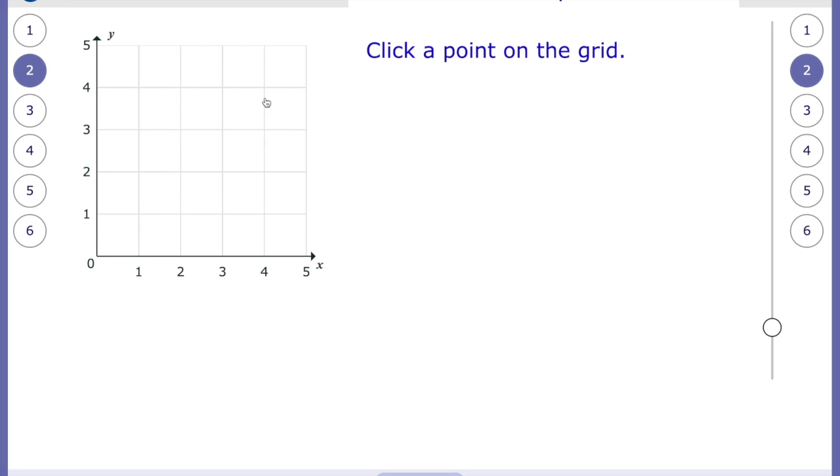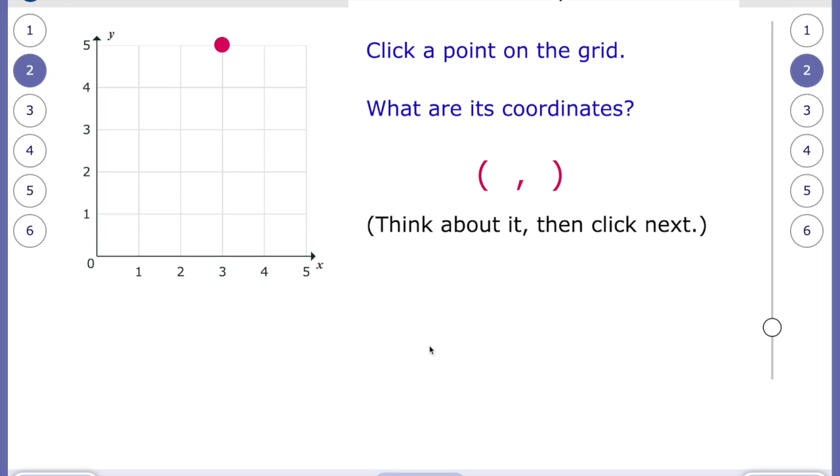If we click a point on the grid, let's say, for example, here. Now have a think. Think about what we just spoke about. What is that coordinate? There's two possible answers. Is it five, three, or three, five? What do you think? That's right. It's going to be three, five, because we have the x-axis and then the y-axis. Well done.